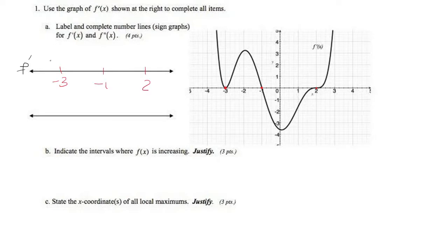To the left of negative 3, it's above the x-axis, therefore it's positive. Same thing between negative 3 and negative 1. Between negative 1 and 2, it's below, so it's negative. And to the right of 2 is positive.